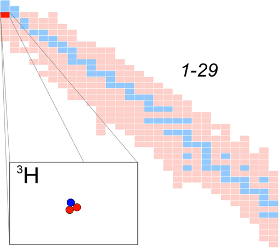Tritium is used as a radioactive tracer, in radioluminescent light sources for watches and instruments, and, along with deuterium, as a fuel for nuclear fusion reactions with applications in energy generation and weapons. The name of this isotope is derived from Greek — modern tritos — meaning third.